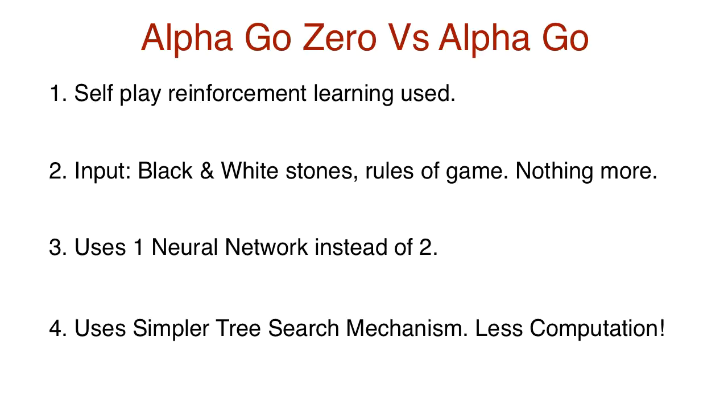This will make a lot more sense when I go through the details of AlphaGo Zero, so let's do that now. Consider a neural network F, initialized with random weights theta zero. This network consists of numerous layers of convolution, batch normalization, and activation, and is finally made to output two quantities.